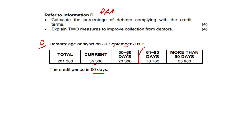These are the bad ones. From 61 to 90 days, you are outside the credit period. And more than 90 days, we are now risking bad debts here. Look how big those figures are — $65,900 and $76,700. That's a lot more than those who are within our credit period, so we've got some really big issues here.